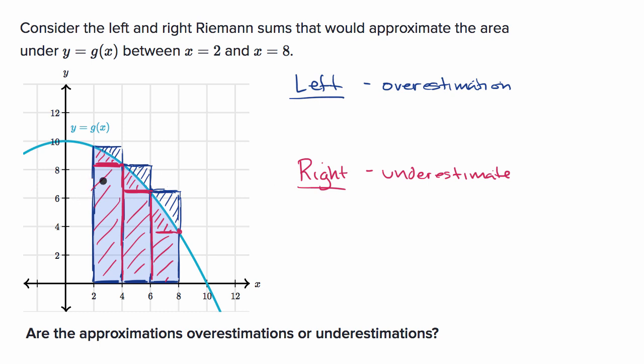Now, if your function was strictly increasing, then these two things would be swapped around. And of course, there are many functions that are neither strictly increasing or decreasing, and then it would depend on the function. And sometimes even, it would depend on the type of subdivisions you choose to decide whether you have an overestimate or an underestimate.